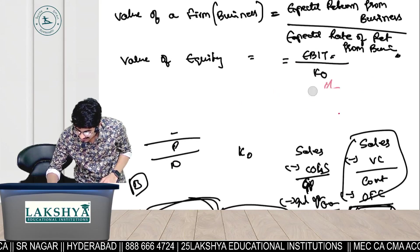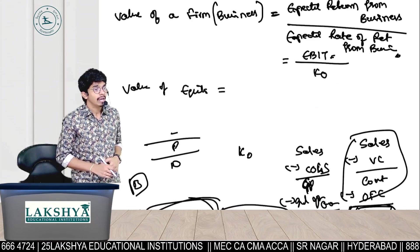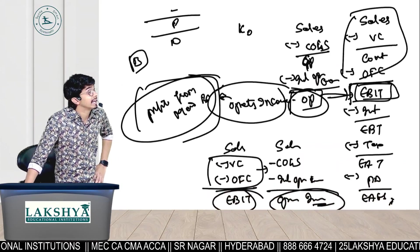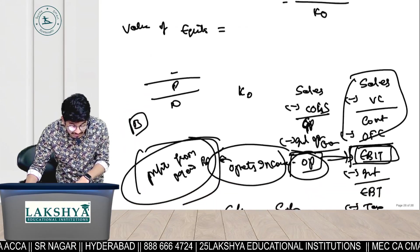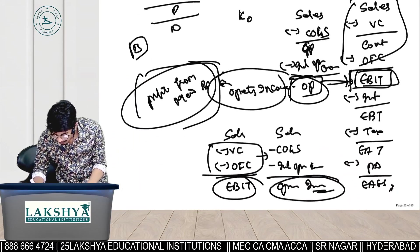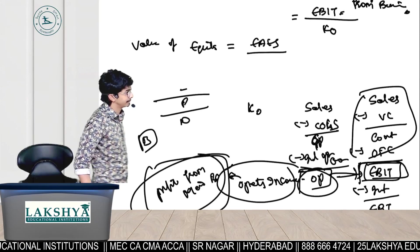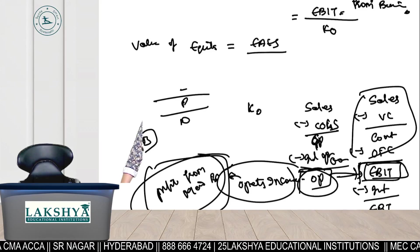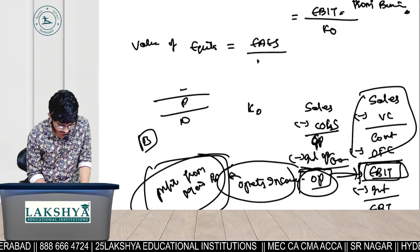The second formula is value of equity. As an equity shareholder, the return is earnings available to equity shareholders — not the total EBIT. Since we are calculating the value of equity, we consider only the return from the point of view of equity shareholders: earnings available to equity shareholders divided by Ke, the expected rate of return of equity shareholders.